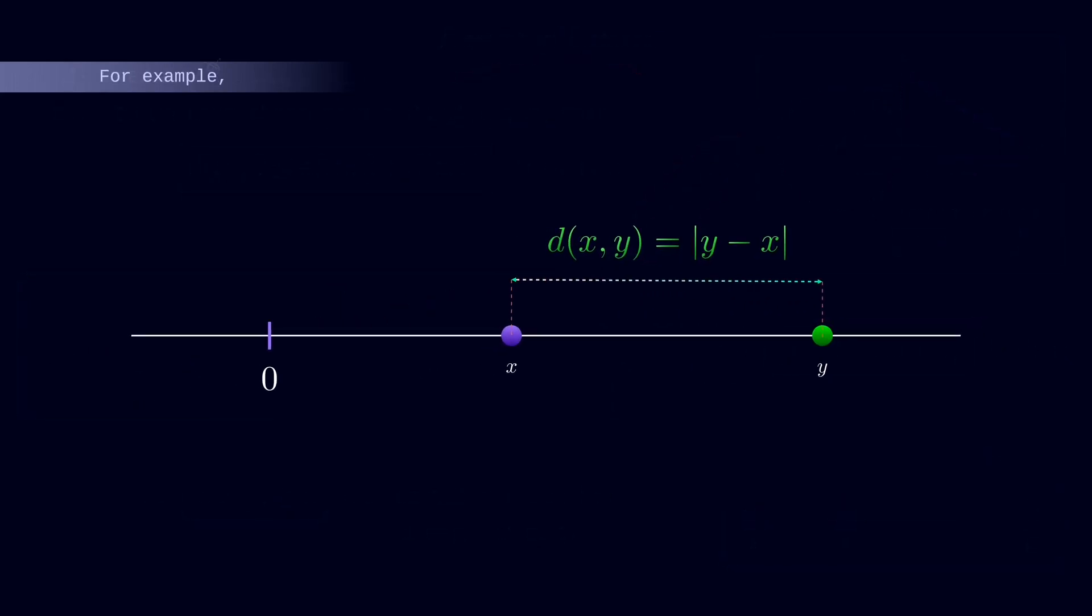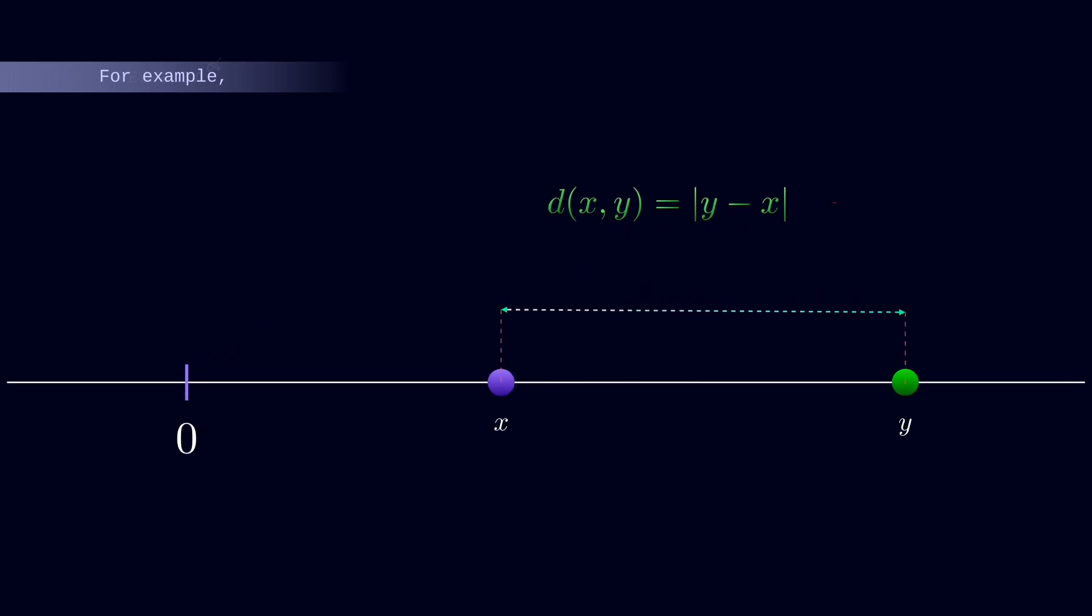For example, if we define the distance between two points by d of xy, where x and y are in the set of all real numbers R, then d is a metric on R, and R and d is a metric space. But what if we upgrade the dimension?